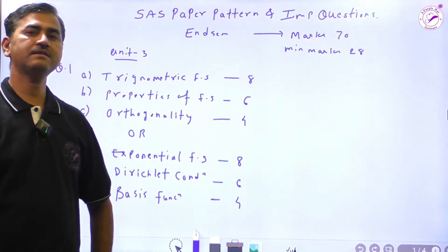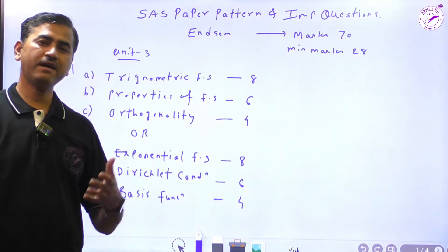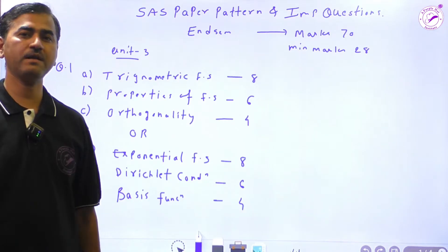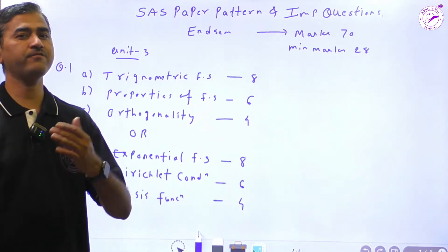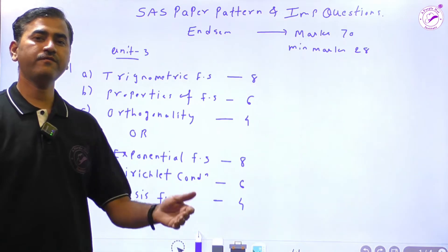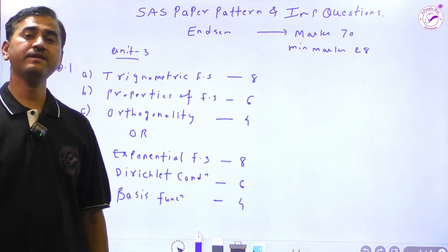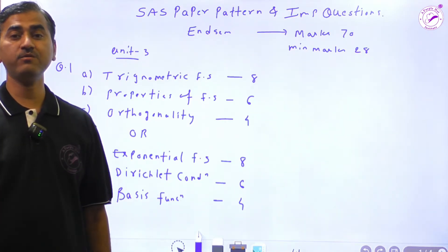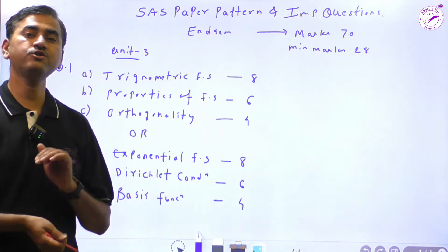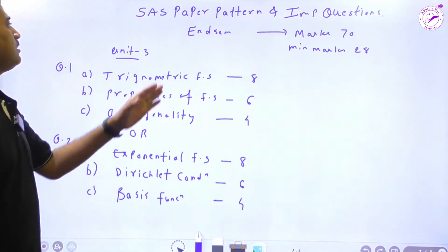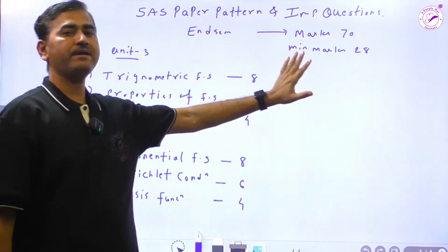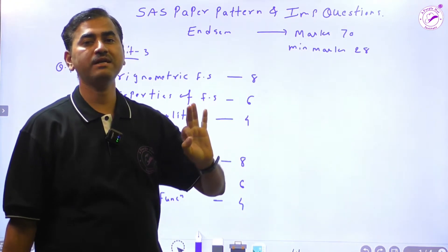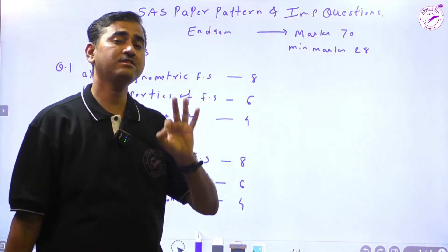Welcome students once again to this Signal and Systems course. We have already covered all four units. I hope you have seen all the videos properly and solved the numericals. Now it's time for the exam — exams are starting after 15 days. The exam is out of 70 marks and you need to score a minimum of 28 marks, which is very easy if you study properly.